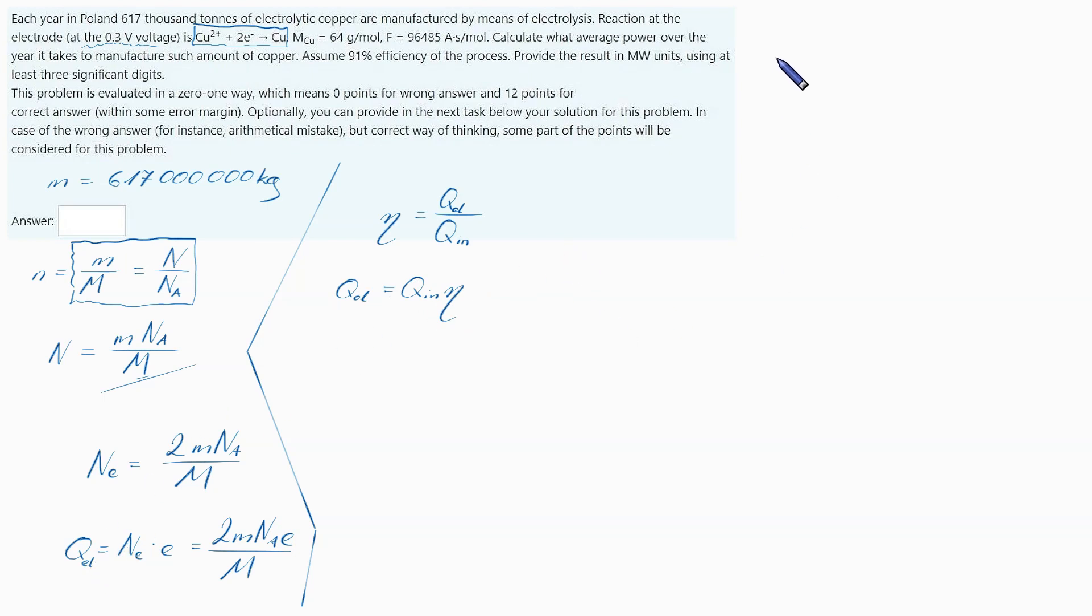Current, by definition, is charge over time, so charge is given by current times T. Electrical power, power of current at a given voltage, is given by formula U times I, which gives us a formula for I: I is P over U.